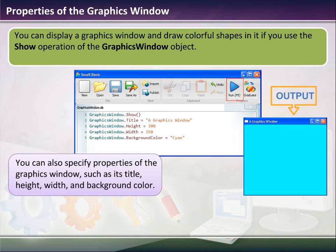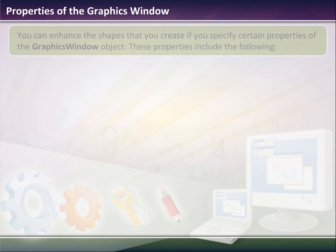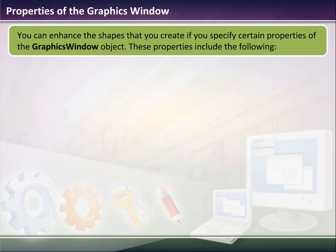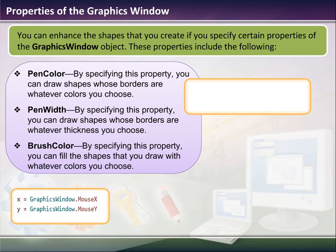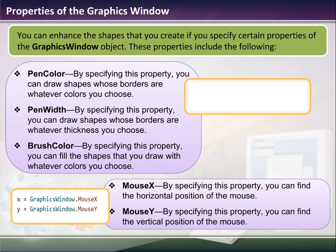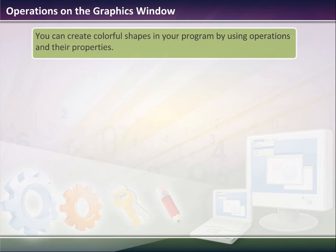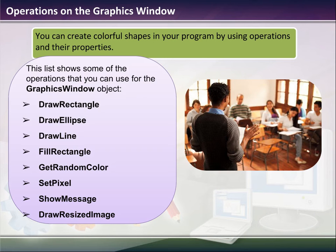Those five lines of programming will give you a graphics window that looks like that. You can also enhance the shapes that you create by specifying certain properties. These properties include the pen color, the pen width or thickness, and the brush color. You can also position a cursor using the Mouse.X object to find the horizontal position of the mouse, and Mouse.Y to find the vertical position.